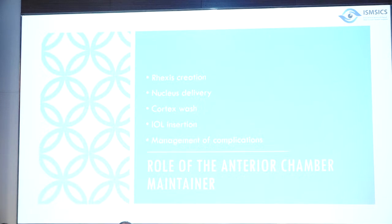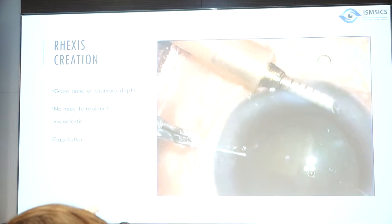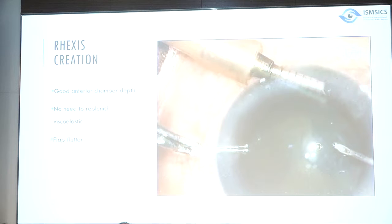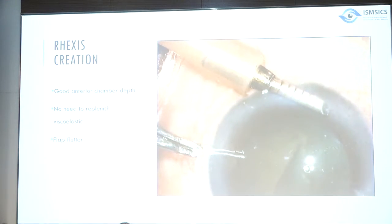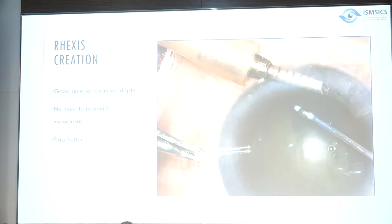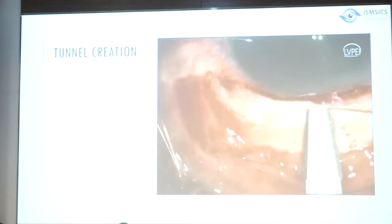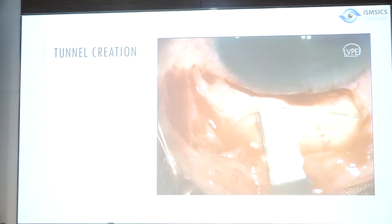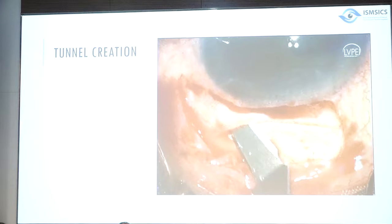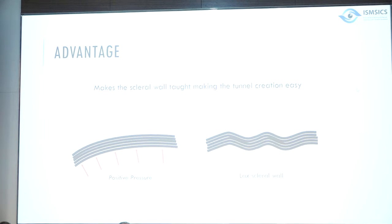The AC maintainer can be used during capsulorhexis — eliminating the need to repeatedly inject viscoelastic. The flap tends to flutter near the maintainer but keeping it flat on the anterior capsule yields a good rhexis. During tunnel creation with the AC maintainer on, you get good tunnel depth and the globe does not soften. The AC maintainer keeps intraocular pressure positive, preventing lax scleral wall during tunnel creation.